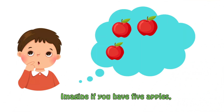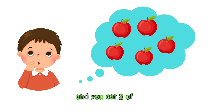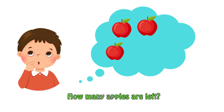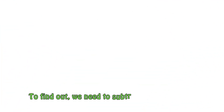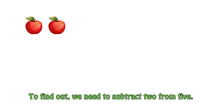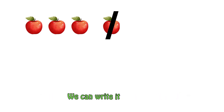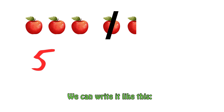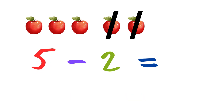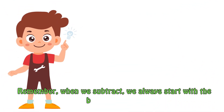Let's start with a simple example. Imagine if you have five apples and you eat two of them. How many apples are left? To find out, we need to subtract two from five. We can write it like this. Remember, when we subtract, we always start with the bigger number.